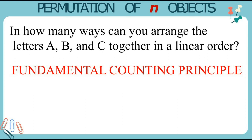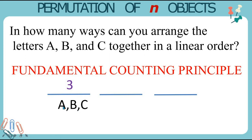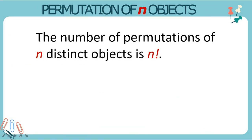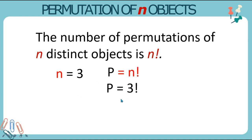If we apply the fundamental counting principle, since we have 3 letters to be selected, we will draw 3 lines. On the first line we have 3 options — we can choose from A, B, or C. If we take A, then we only have 2 options: B or C. If we take A and B, then we only have 1 option on the last line, and that is C. Multiplying all the given options, we arrive at 6 ways. Remember that the number of permutations of n distinct objects is n factorial. So if n equals 3, then the permutation P equals 3 factorial, which equals 6 ways.